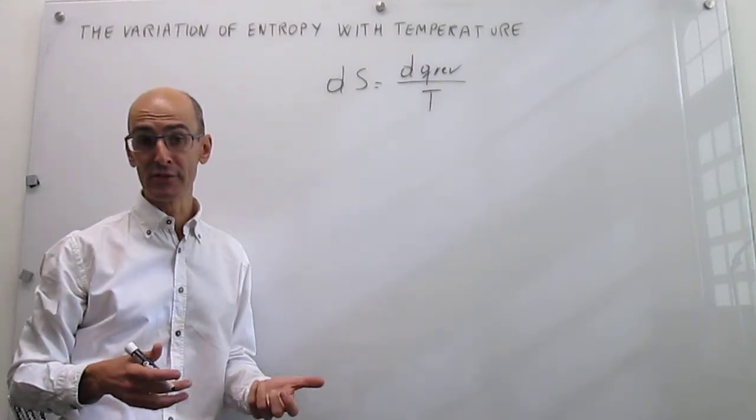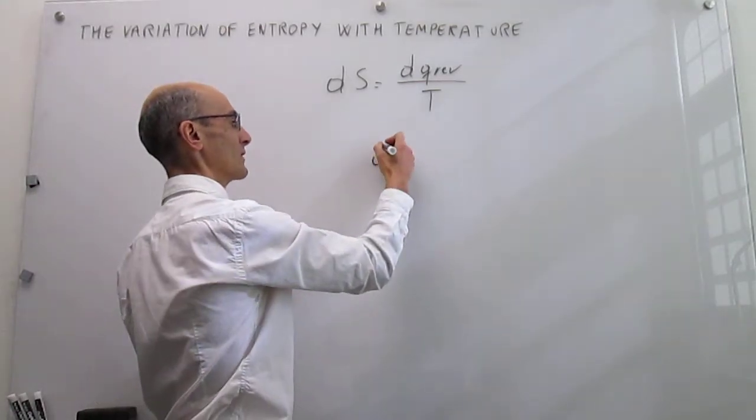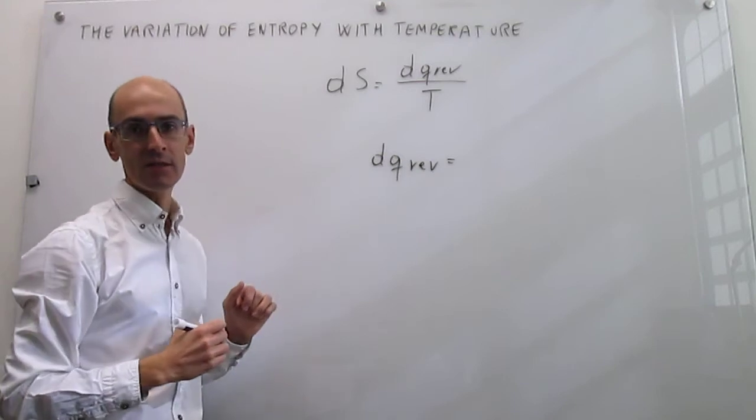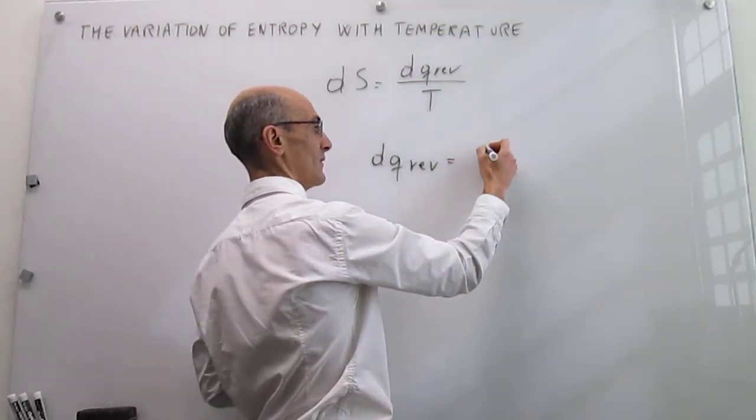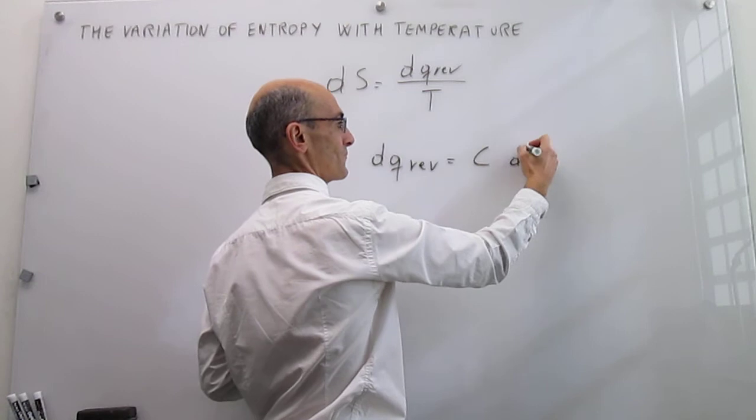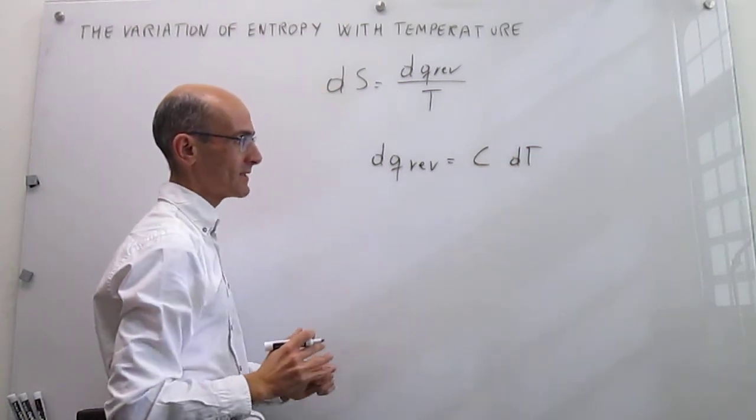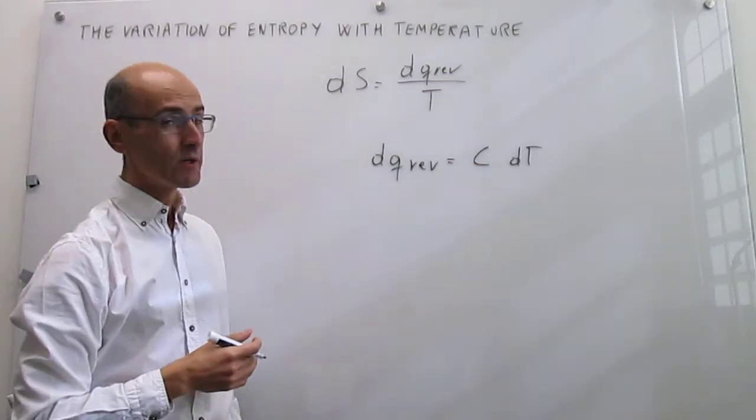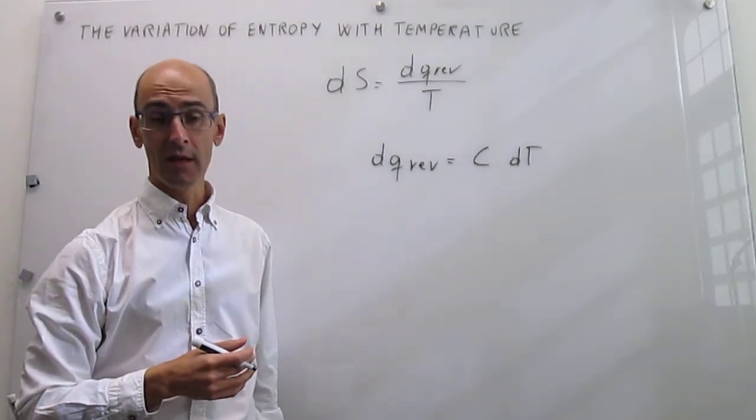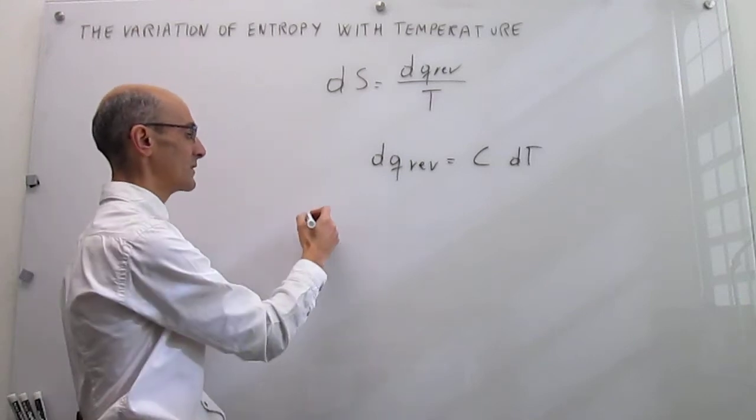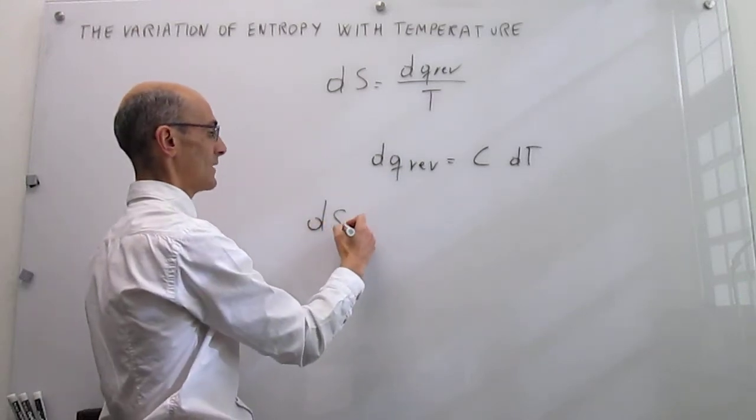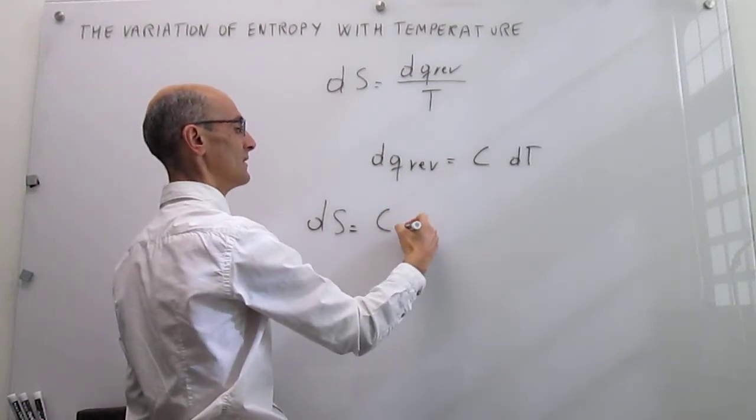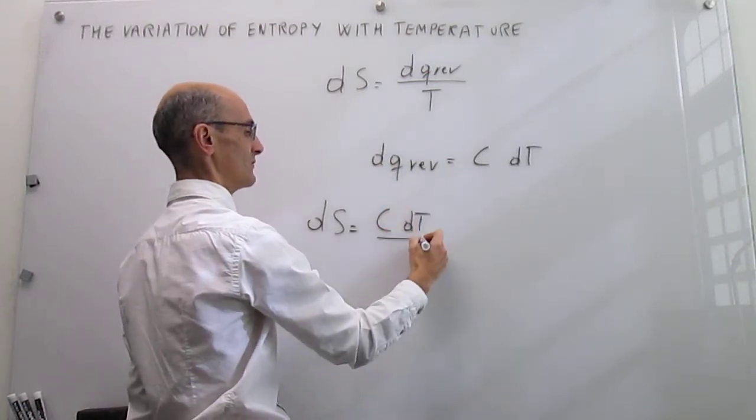We know from our work with the first law that the way that we understand the energy transfer as heat in a heating or cooling process is simply the relationship of the product of the heat capacity multiplied by the change in temperature. This sets up a very nice way to determine how the entropy changes with temperature, because now we can simply replace this heat capacity change in temperature over temperature.